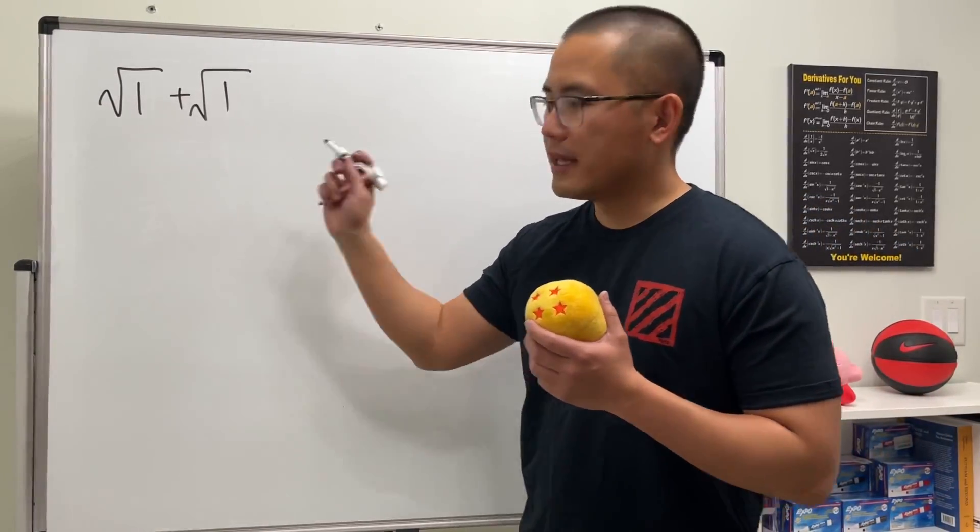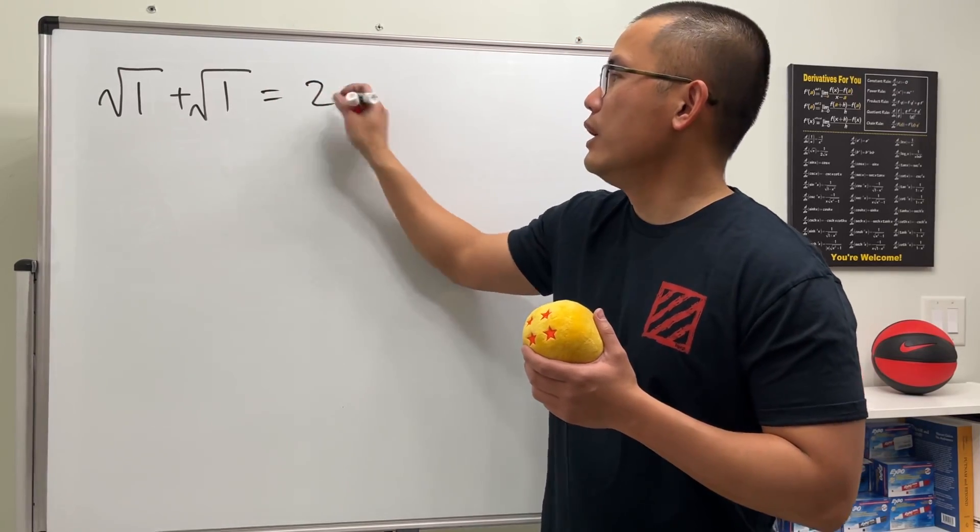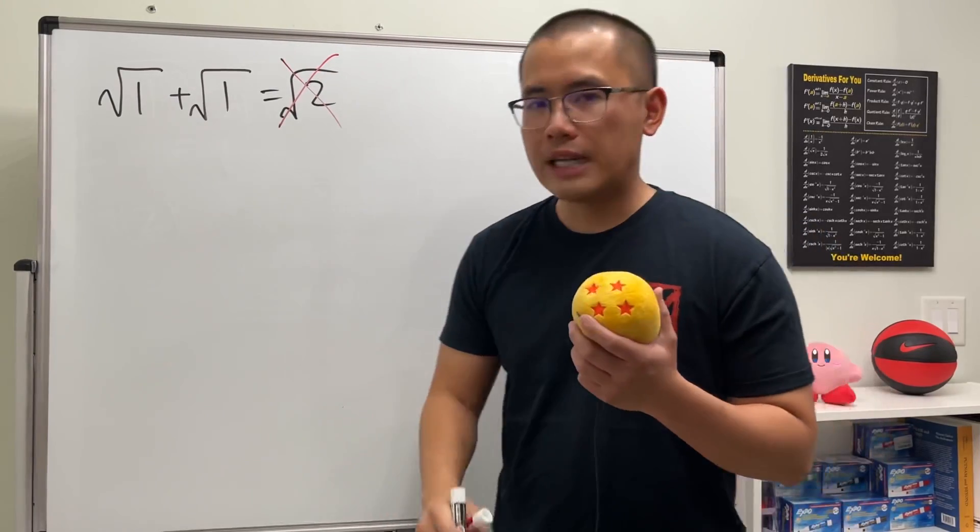So what's the answer to square root of 1 plus square root of 1? Well, this is very easy because 1 plus 1 is just equal to 2, and of course, the square root stays. You know, this is just a joke. Don't do this.